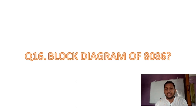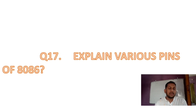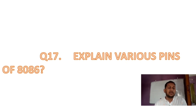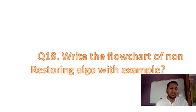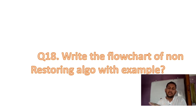The block diagram of 8086 is an important question. Question 17: The PIN diagram — one can have a number of PINs, and max and min mode. Question 18: Write the flowchart of non-restoring algorithm. The restoring algorithm flowchart is the most VBI part, and the non-restoring algorithm is also covered. Either restoring or non-restoring: Booth algorithm, restoring division, and non-restoring division have all been covered.